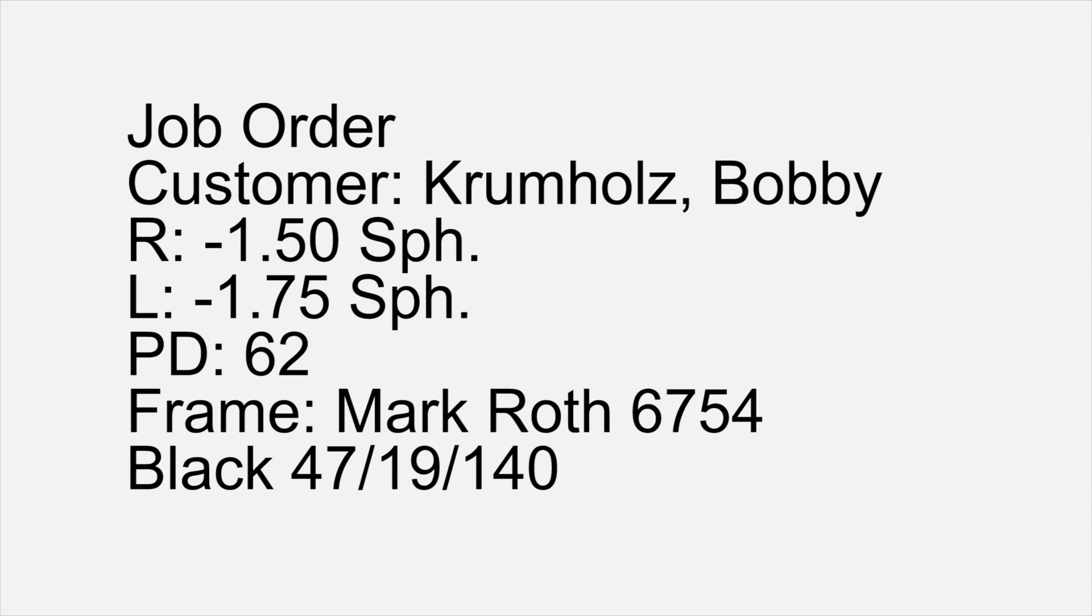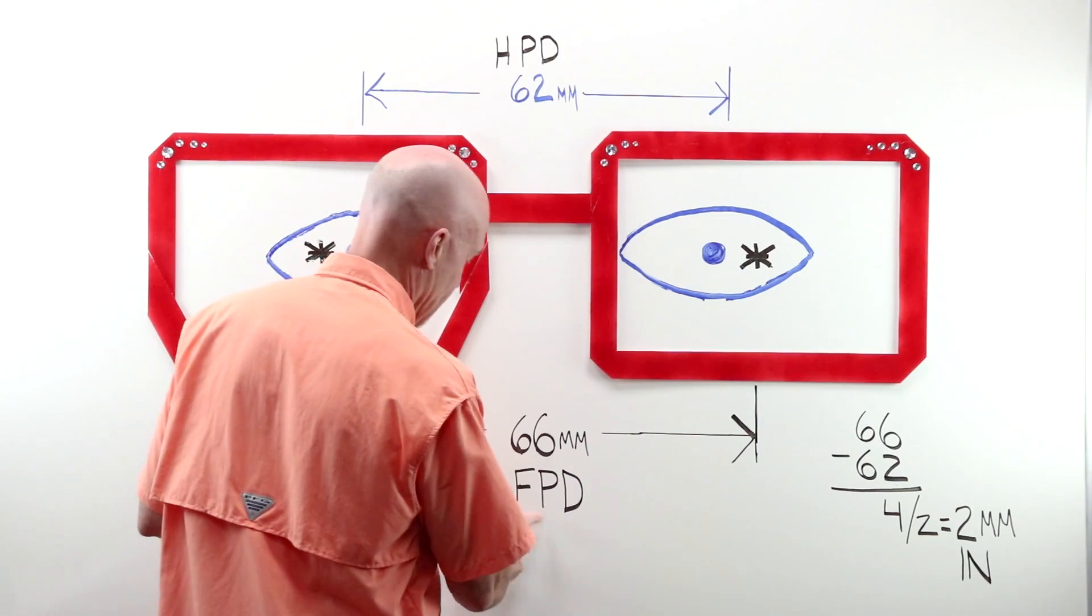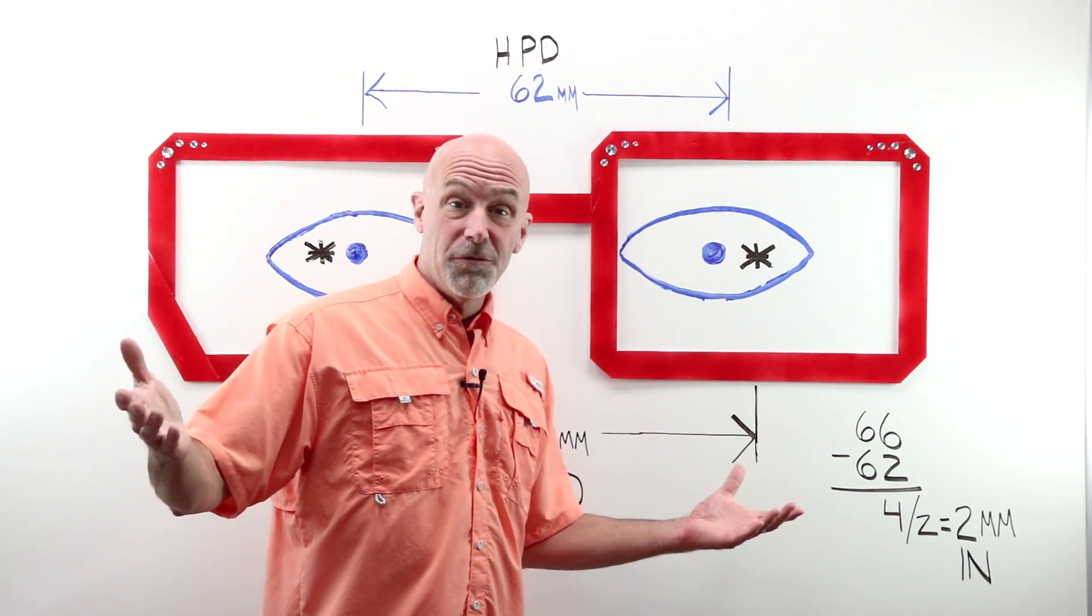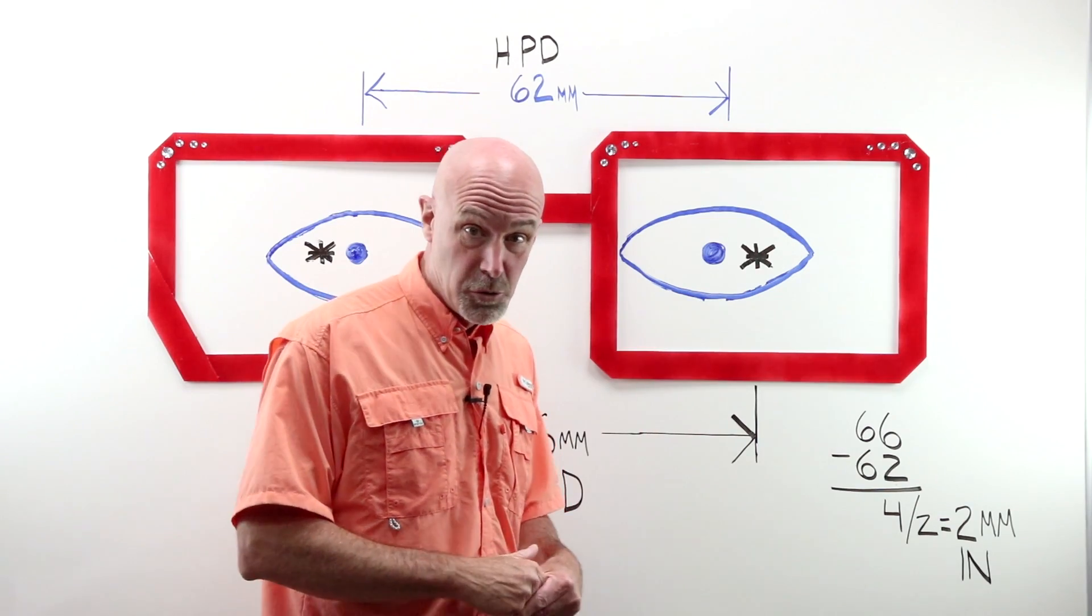Here is the job order that we are going to look at today. Customer, Krumholtz, Bobby. His right is a minus 150 sphere. Left, minus 175 sphere. PD is 62. The frame is a Mark Roth 6754 in black, size 47, 19, 140. You have a frame PD, FPD, and if you don't know the boxing system, there's a wonderful video for it on the OpticianWorks YouTube channel.